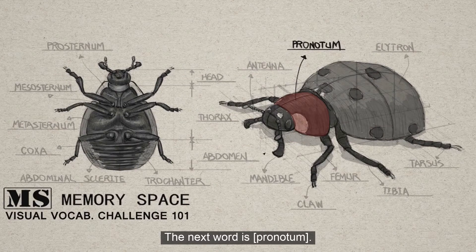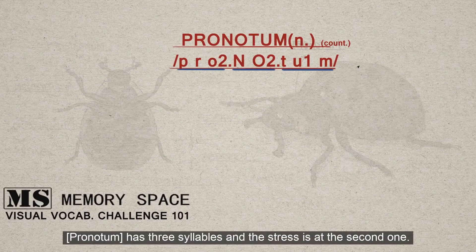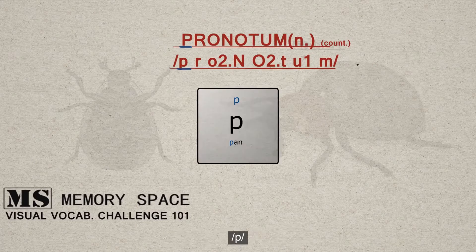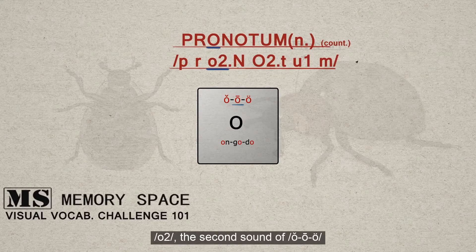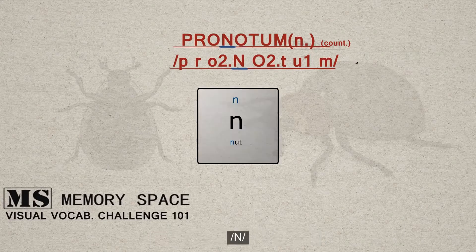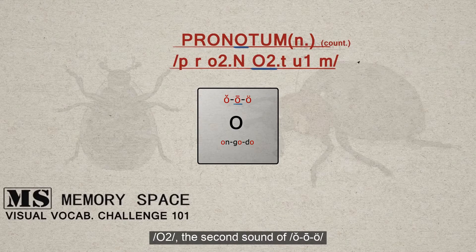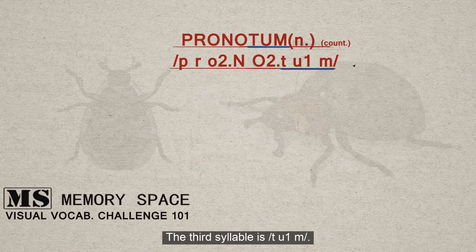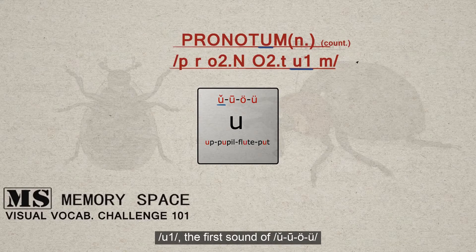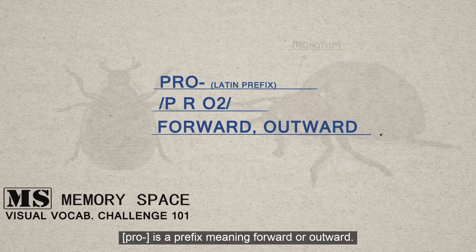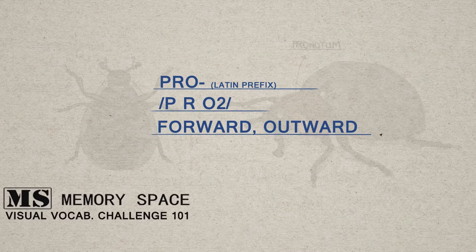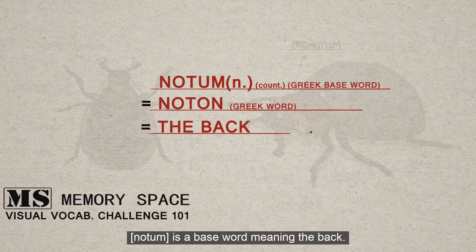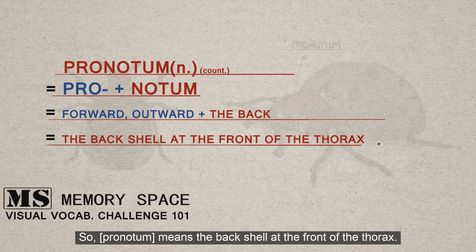The next word is pronotum. Pronotum has three syllables and the stress is at the second one. The first syllable is 'pro' — P, R, O the second sound of A-O-U. The second syllable is 'no' — N, O the second sound. The third syllable is 'tum' — T, schwa sound. Pro is a prefix meaning forward or outward. Notum is a base word meaning the back. So pronotum means the back shell at the front of a thorax.